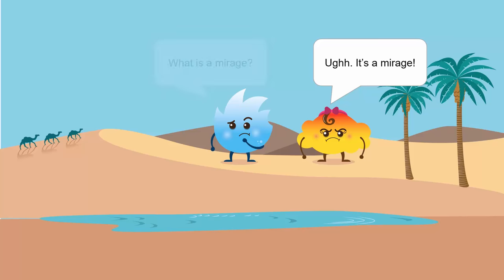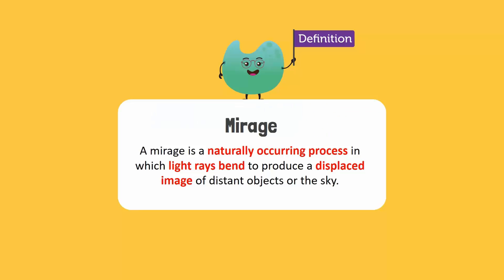A mirage is a naturally occurring process in which light rays bend to produce a displaced image of distant objects or the sky.